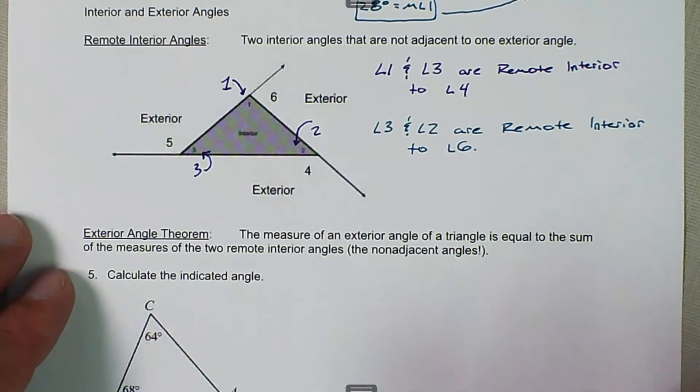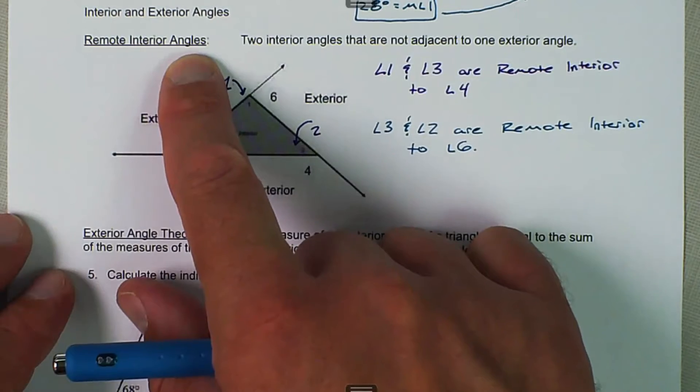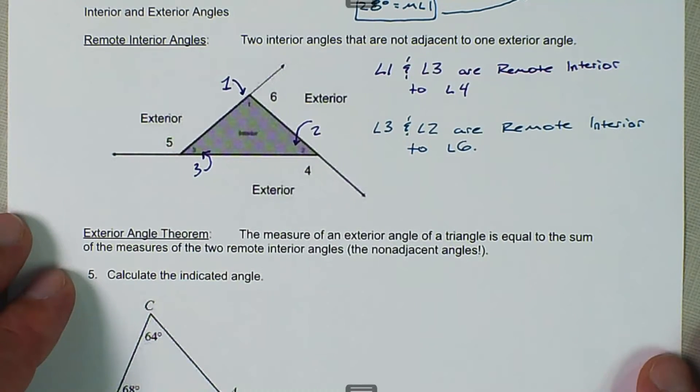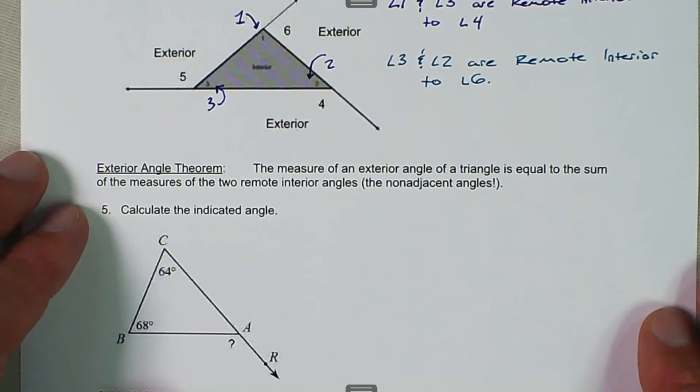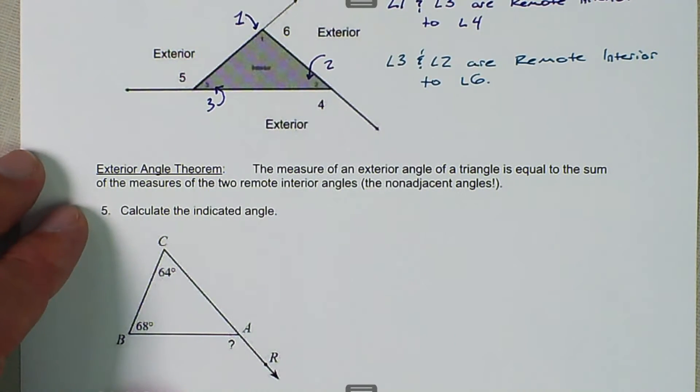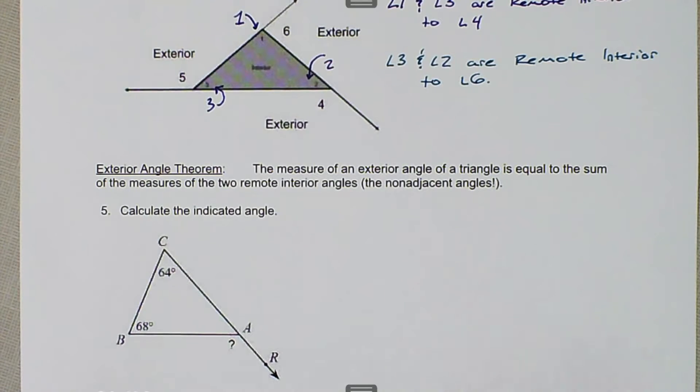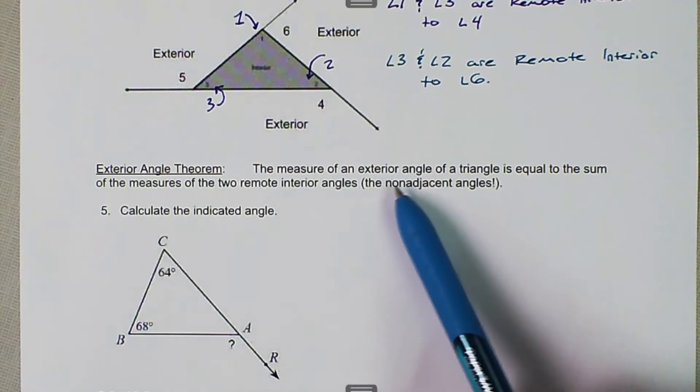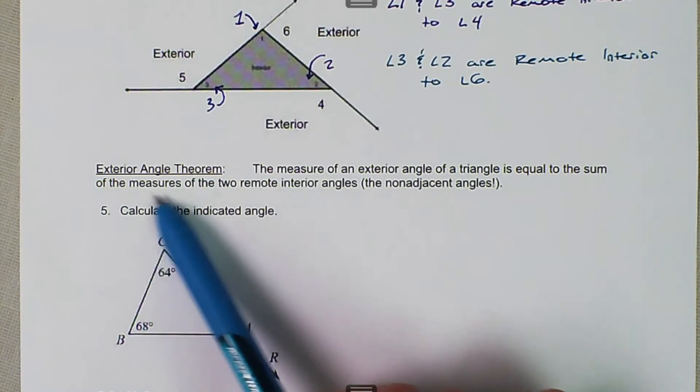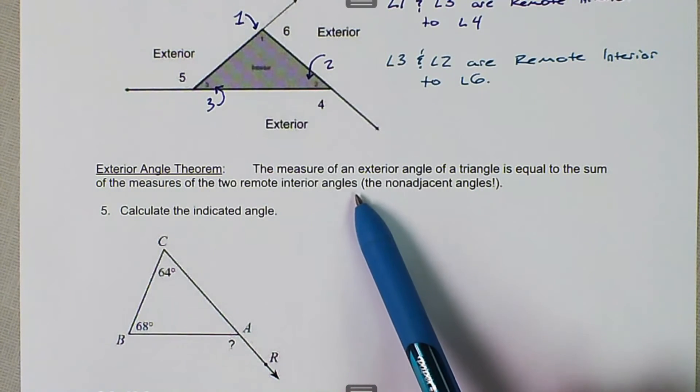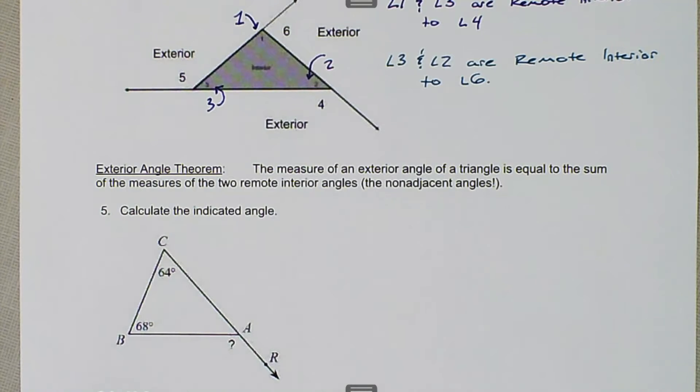We have to understand what remote interior angles are in order to understand what the exterior angle theorem is. The exterior angle theorem states that the measure of an exterior angle of a triangle is equal to the sum of the measure of the two remote interior angles, or the non-adjacent angles.